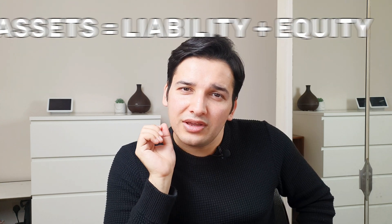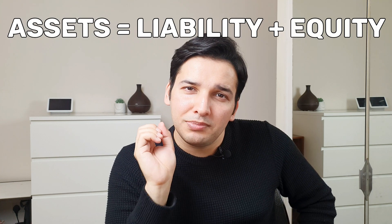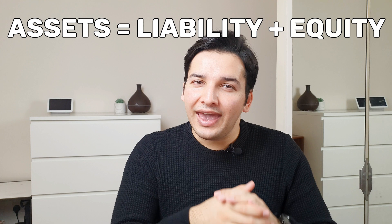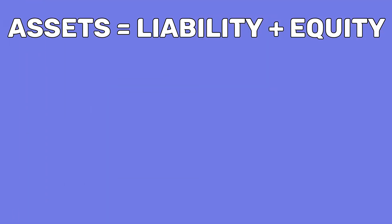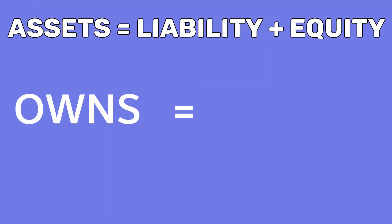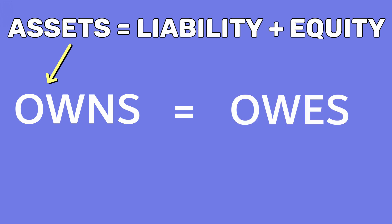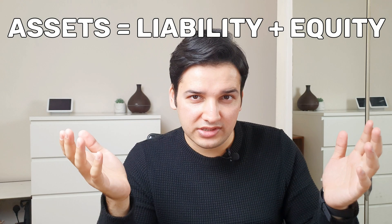Back to the equation: assets equals liability plus equity. Anything that a business owns will be equal to anything that the business owes to its third-party suppliers, plus anything that it owes to its owners, which are the shareholders. That's the literal meaning of this equation.